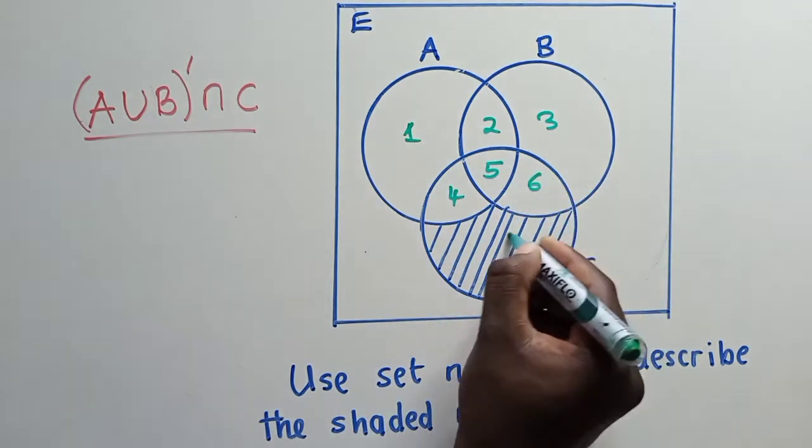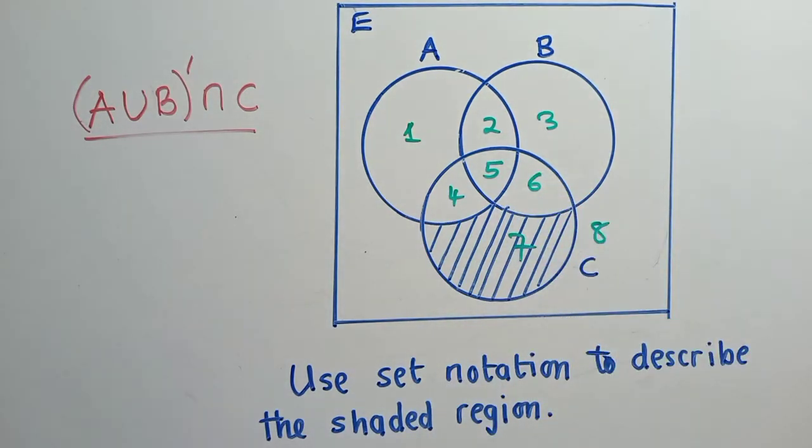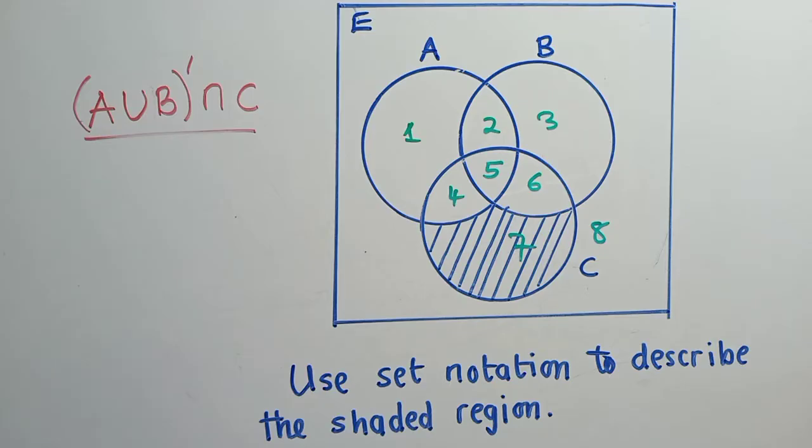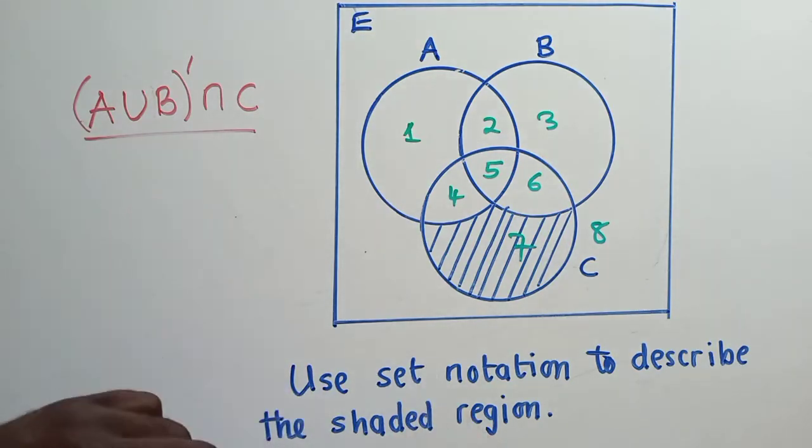This is 1, this is 2, this is 3, 4, 5, 6, 7, and 8 outside. We want to see if this is our solution, if our solution is okay.